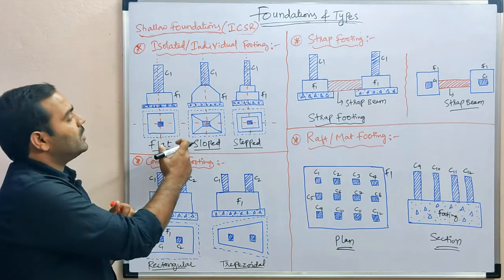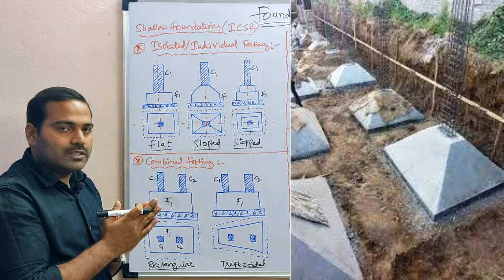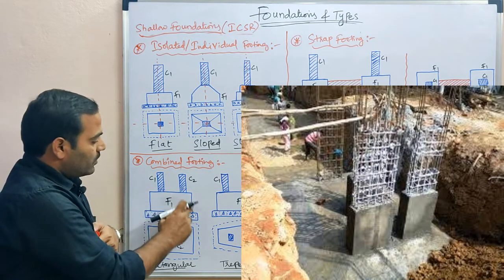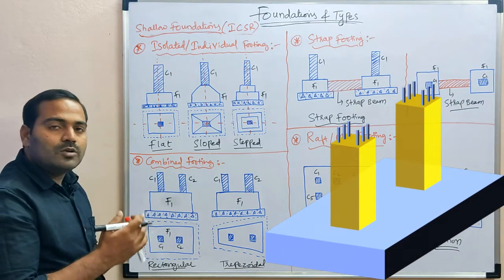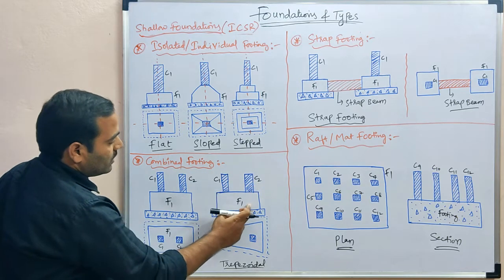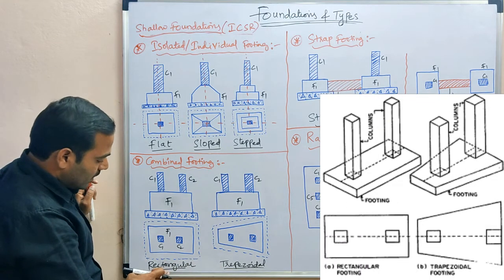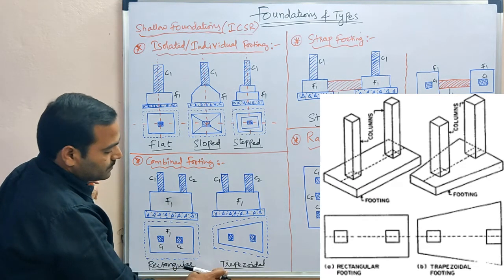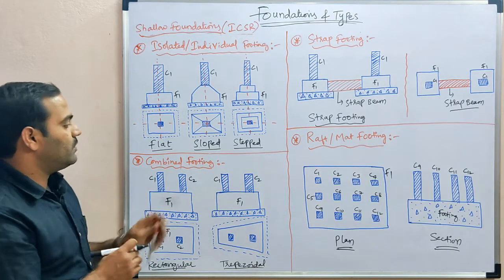The second type of shallow foundation is combined footing. When the distance between two column footings is very less, we use a combined footing — two columns are laid on a single footing. Combined footings are divided into two types based on shape: rectangular type, where the footing shape is rectangular, and trapezoidal type, where the footing shape is trapezoidal.